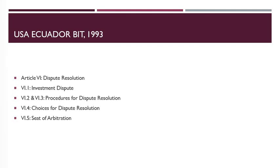There is also another provision, Article 6.3(b), which states that once the national or company concerned has consented to reference of the dispute to ICSID, the additional facility, or UNCITRAL arbitration rules, either party to the dispute may initiate arbitration in accordance with the choice so specified in the consent. Article 6.5 provides for a New York Convention country as the seat of arbitration in the case of non-ICSID arbitration.